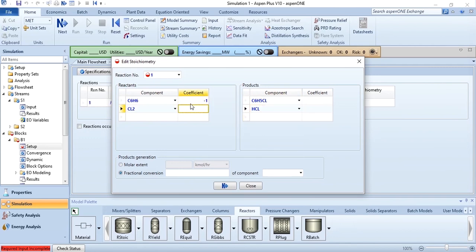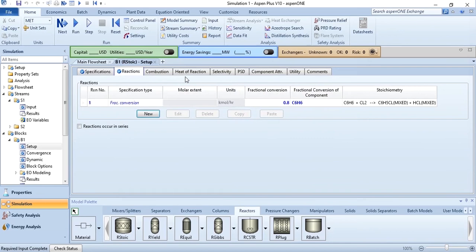Coefficient 1. I have just entered 1 and it has automatically converted it to minus 1. So it is again 1, 1, and 1. You can see it is still not ticked because it needs either molar extent value or fractional conversion. So fractional conversion 0.8 of the component which is C6H6, and now it has turned blue.